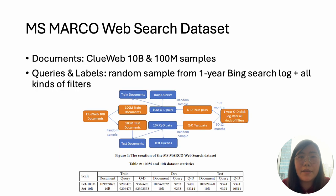MSMACO Web Search incorporates the largest 10 billion open web document dataset, ClueWeb22, as our document corpus, which contains rich information from web pages such as vision representation, clean text, and topic tags.